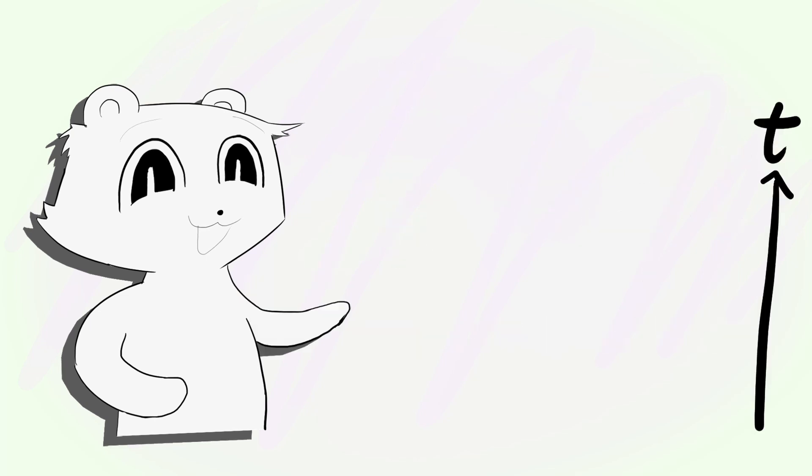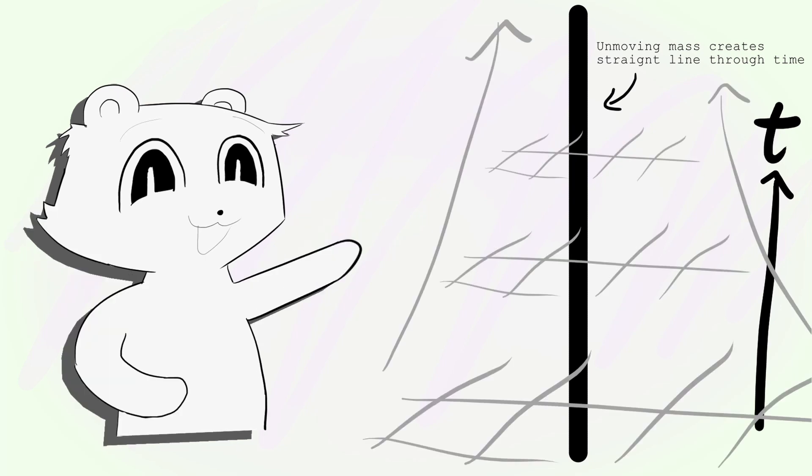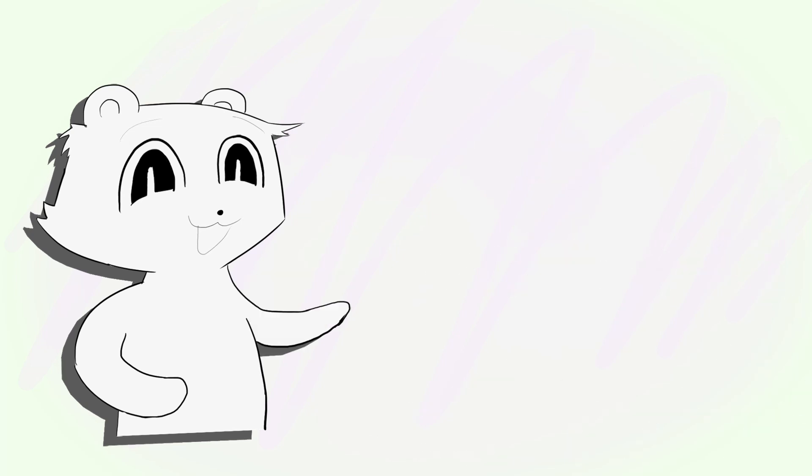What that means is, as a volume of space travels through time, it shrinks. Space literally shrinks around massive objects. Now that we understand this, it actually sounds quite obvious for gravity to be described by curving spacetime.